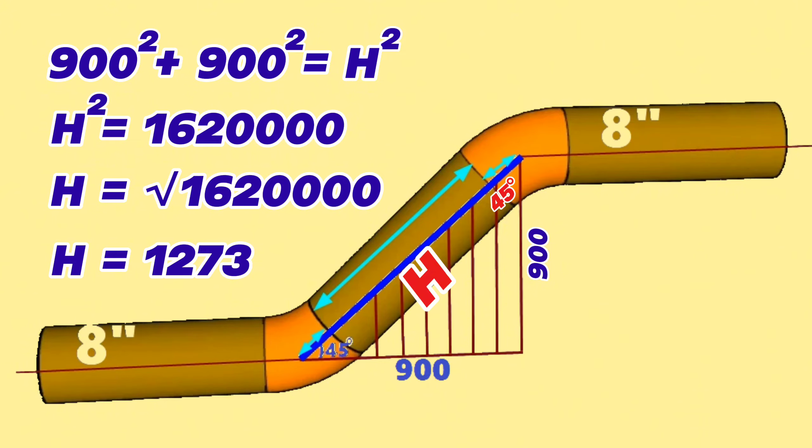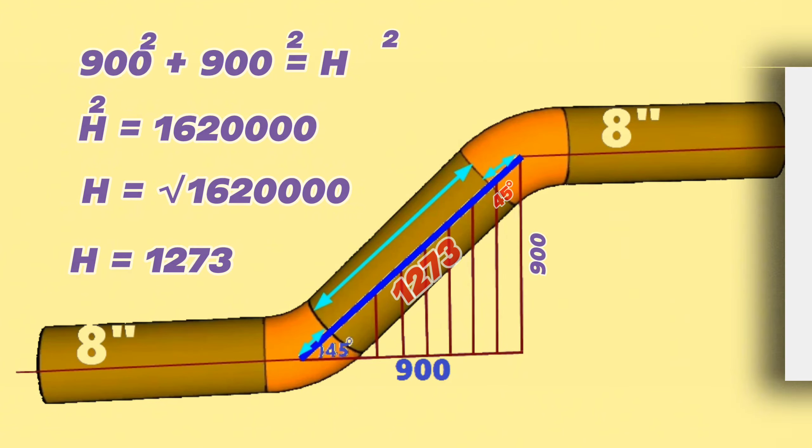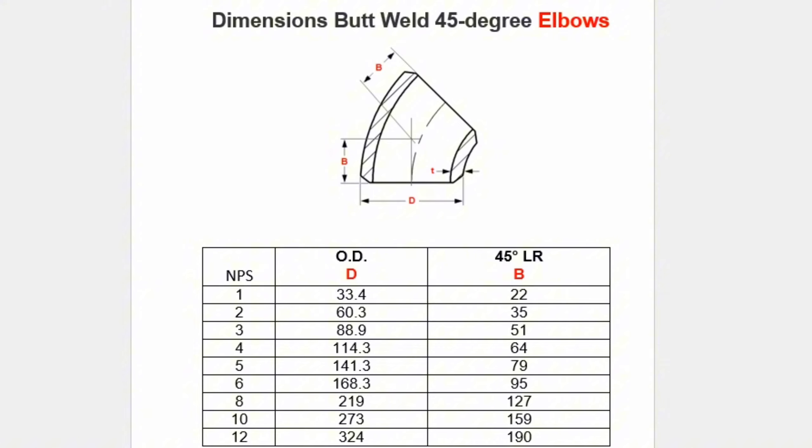This measurement will also be the same as the distance between the elbows in the pipeline. Now we need to find out the 8-inch 45-degree butt weld elbows length. Pipe elbow dimensions are covered in ASME B16.9. Let's look at the table giving dimensions for butt weld 45-degree elbows size 1 to 12.